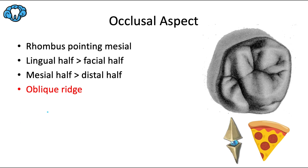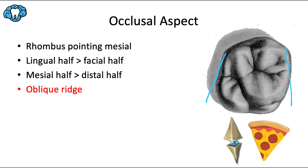The occlusal view is one of the most important in the entire series. The occlusal shape resembles a rhombus skewed in a mesial direction. The tooth converges toward the facial, making the lingual half slightly wider than the facial half — making it the only tooth often wider on the lingual than the facial. It also converges toward the distal, so it's wider on the mesial half than the distal half.